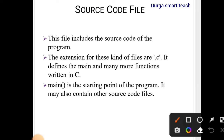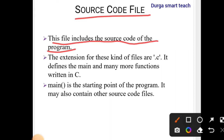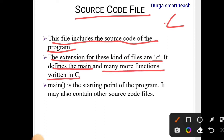First is the source code file. This file includes the source code of the program. Source code is nothing but the program itself. The extension for this kind of file is dot C — so for C programs you save them with the extension dot C, as in 'program name dot C'.